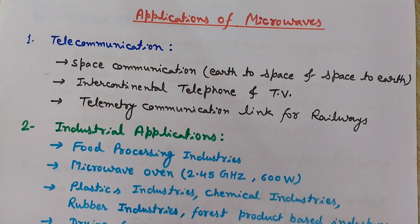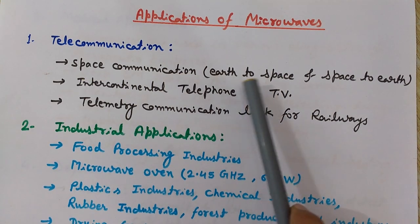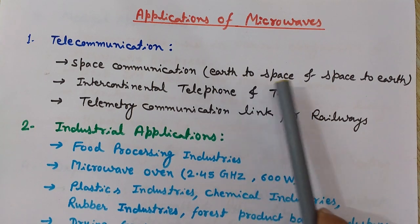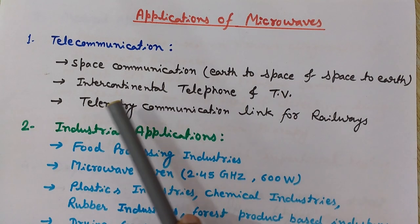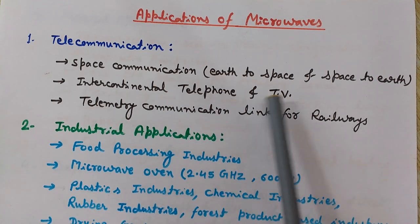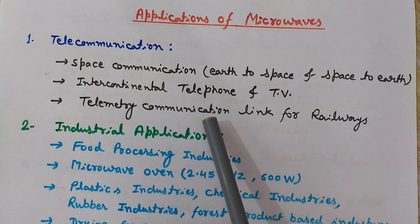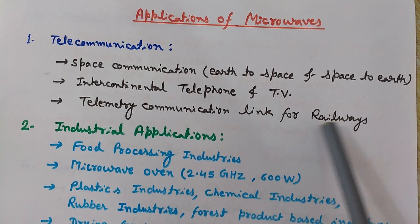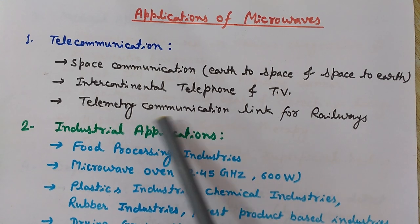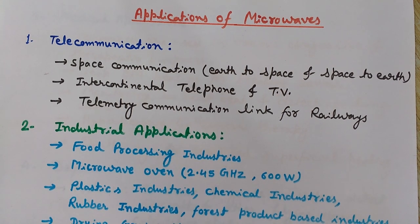Let's start with the applications in telecommunication. Microwaves are used in space communication for earth-to-space and space-to-earth communication, intercontinental telephone and TV, and telemetry communication links. They are also used for establishing telecommunication links for railways.